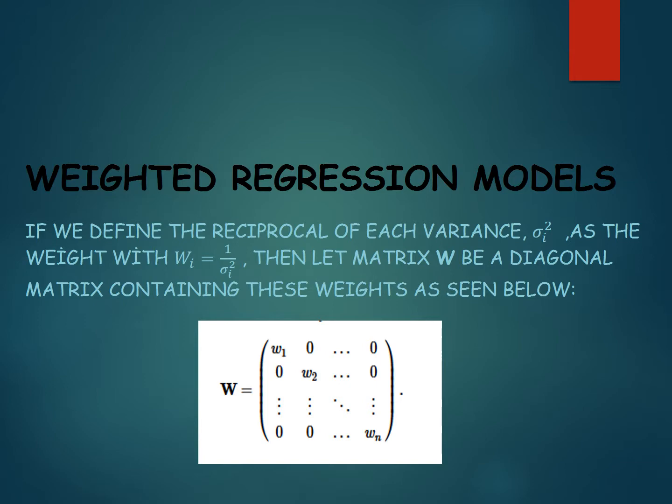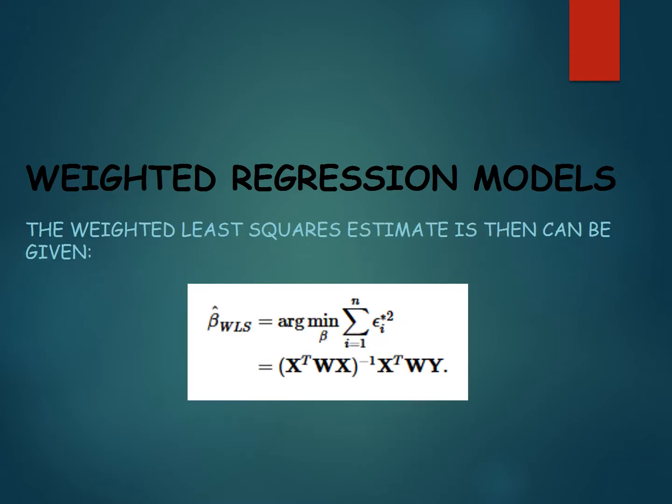If we define the reciprocal of each variance sigma-squared as a weight W, inverse of sigma-squared, then let matrix W be a diagonal matrix containing these weights as seen below. The weighted least squares estimates can then be given in the formula.